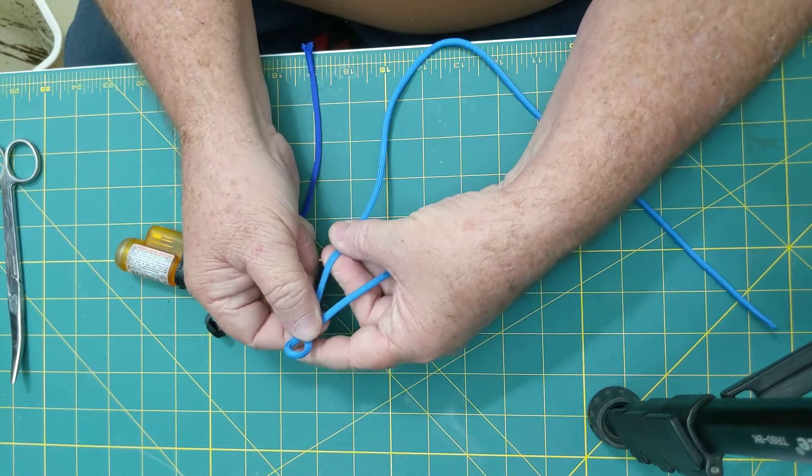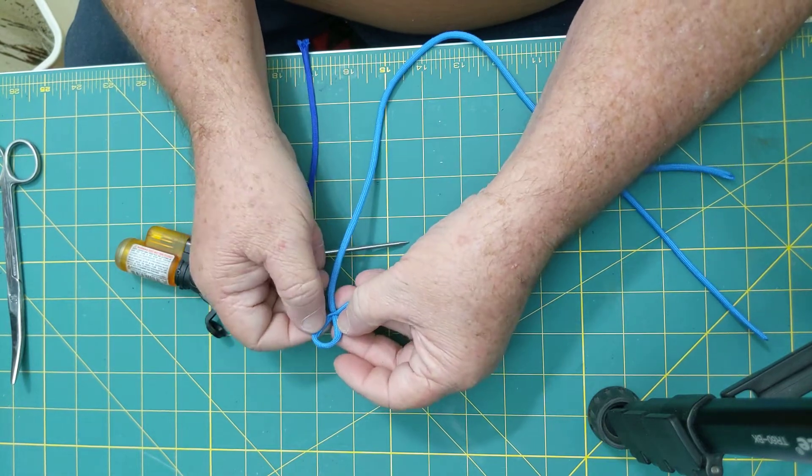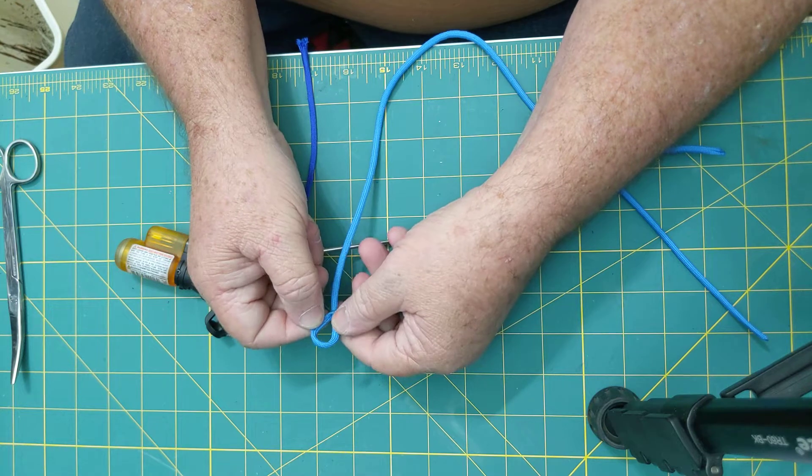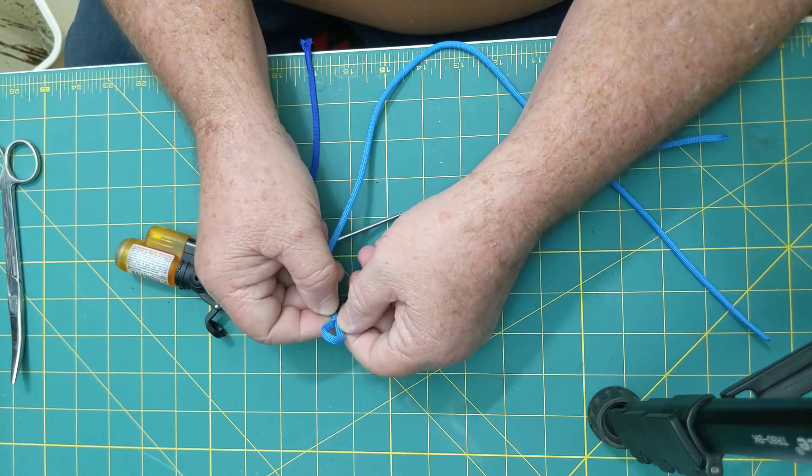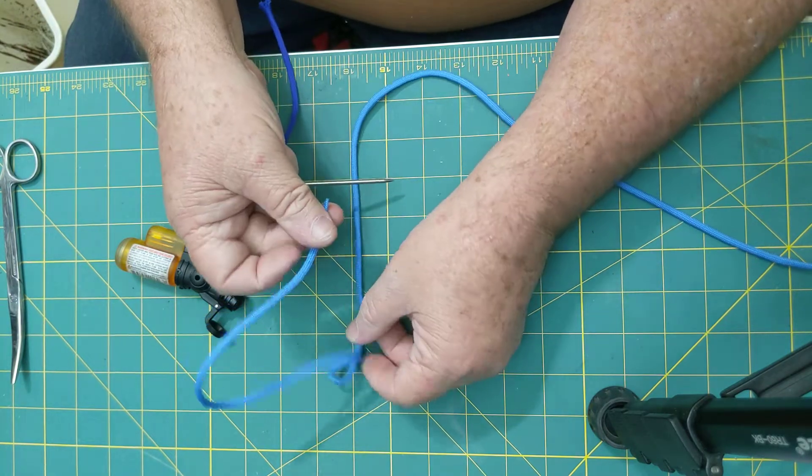That's the long end. You can size that to the diameter of the whip you're going to put the falls in. Then what you do is take the end that you just penetrated, which is the short end.